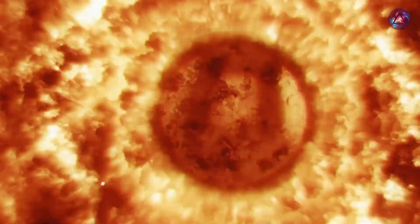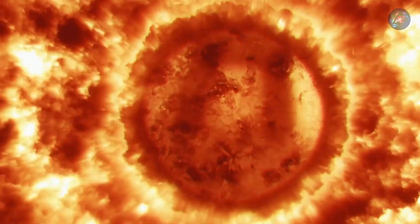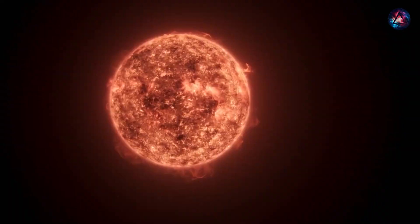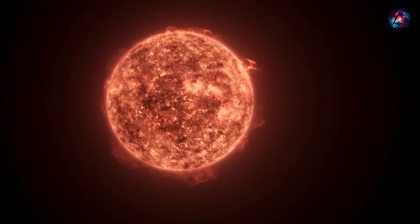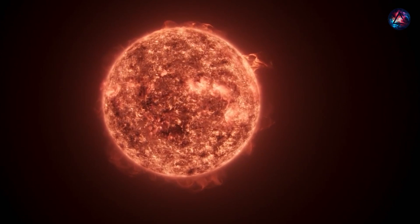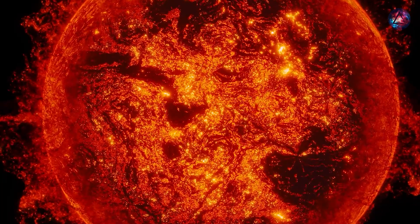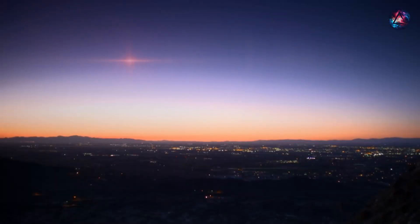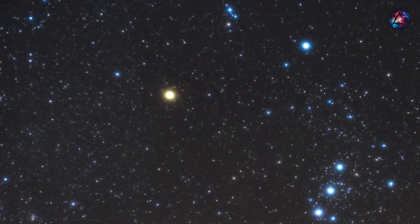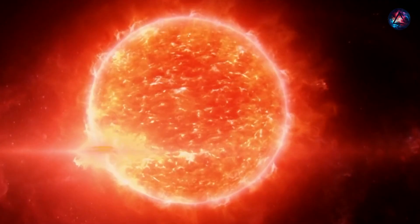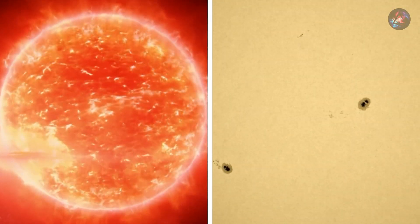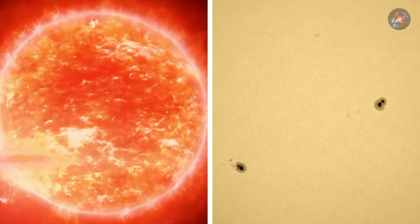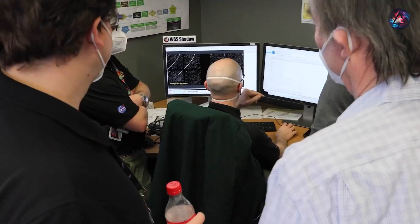Betelgeuse, standing out as a celestial marvel, is on the brink of transforming into a supernova. Its distinguishing features include its colossal size, surpassing our sun by 700 times, and a mass approximately 15 times greater. This supergiant, often described as a cosmic mystery, exhibits irregular dimming every 430 days, creating large dark spots on its surface every six years. The parallels between these phenomena and sunspots on our sun, albeit on a much grander scale, have fueled the intrigue of researchers.